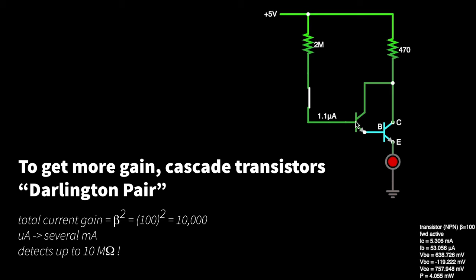So what if you want more gain? Well, one way to do it other than buy a different transistor is actually cascade two of them, connecting the collector-to-emitter in one transistor to the base of the final one.